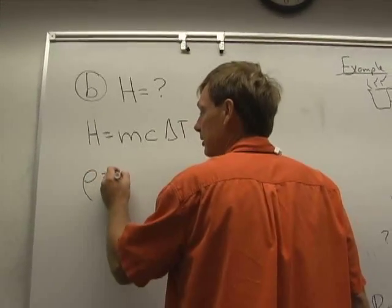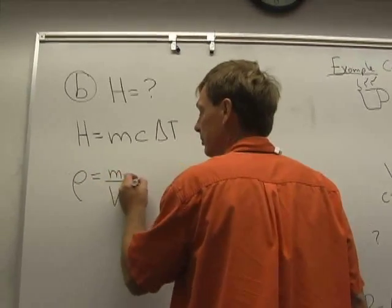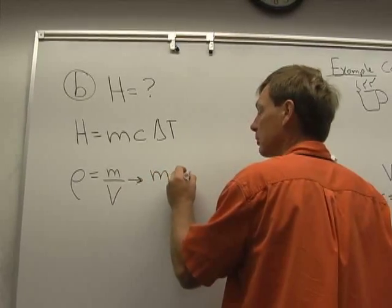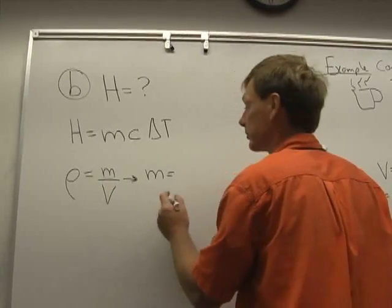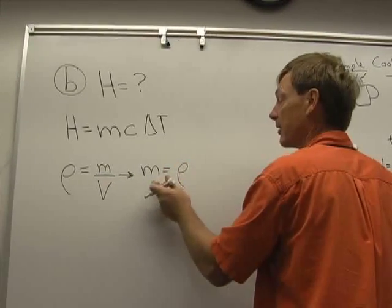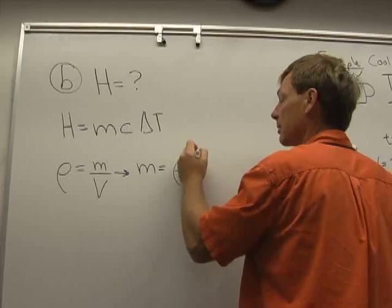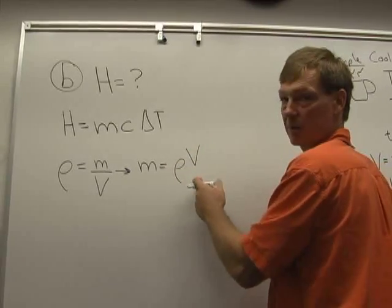So mass density is mass per volume. So the mass of water would be equal to, I'm just multiplying both sides by the volume to solve for the mass. Mass of the water is the mass density of water times the volume of the water, well, coffee.